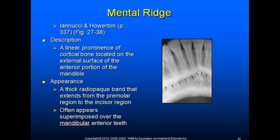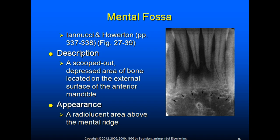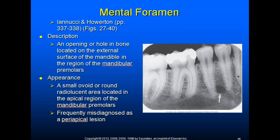The mental fossa is a scooped-out, depressed area of bone located on the external surface of the anterior mandible and appears as a radiolucent area above the mental ridge. The mental foramen is an opening or hole in bone on the external surface of the mandible in the region of the mandibular premolars. It appears as a small ovoid or round radiolucent area in the apical region of the mandibular premolars and is frequently misdiagnosed as a periapical lesion.